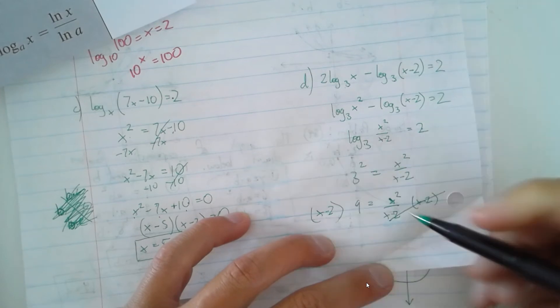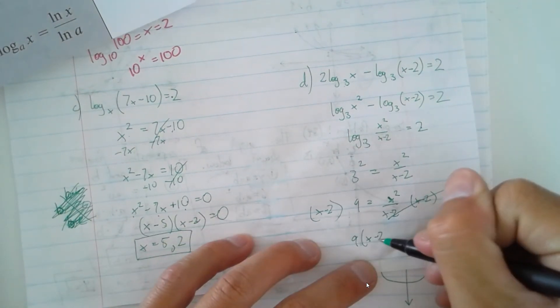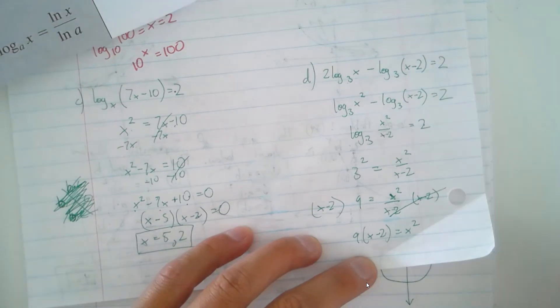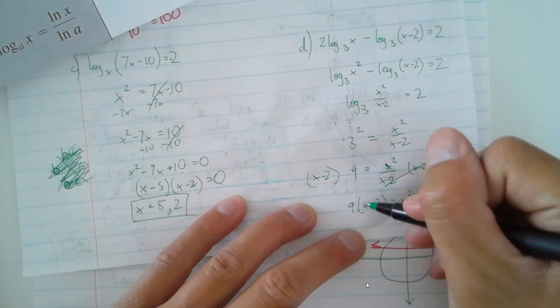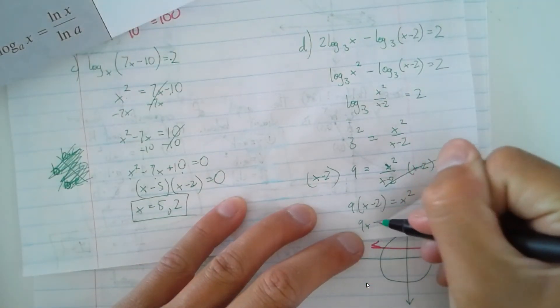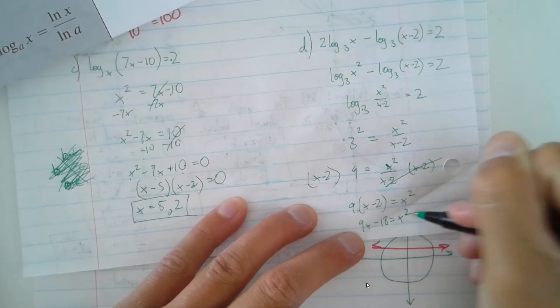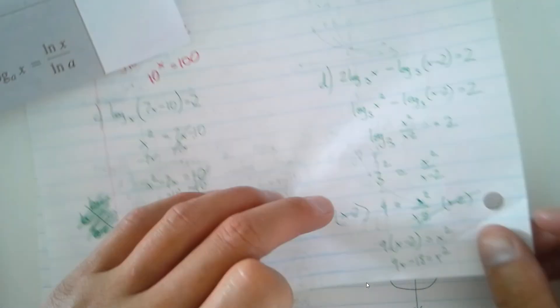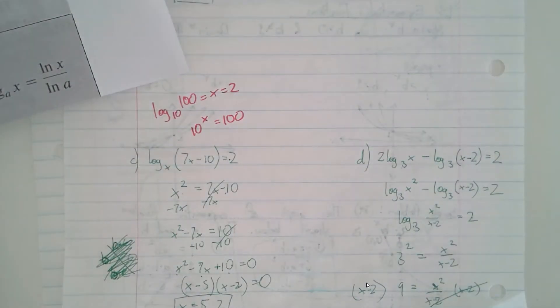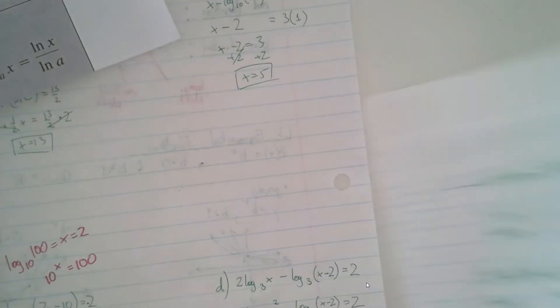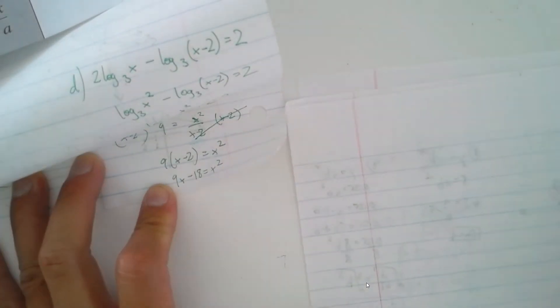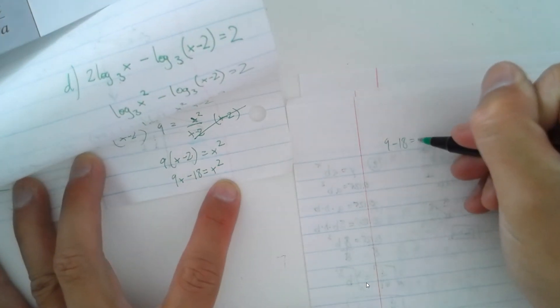So that's going to be 9 times x minus 2 equals x squared. And then let's distribute that 9 here and here. So that's going to be 9x minus 18 equals x squared. So you can kind of see where I'm going with this. Let me find another piece of paper. So let's continue off of what we have here. That's 9x minus 18 equals x squared.